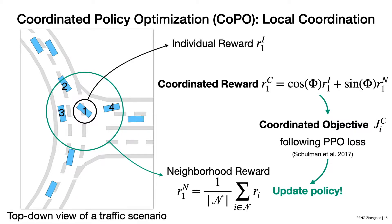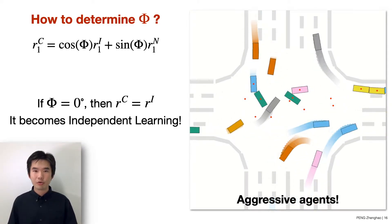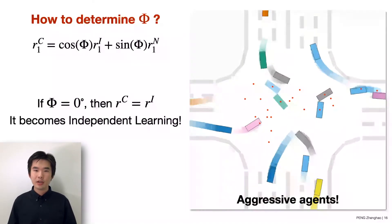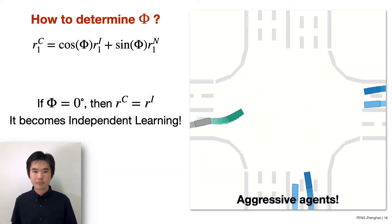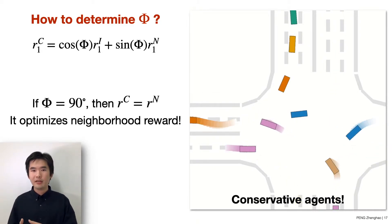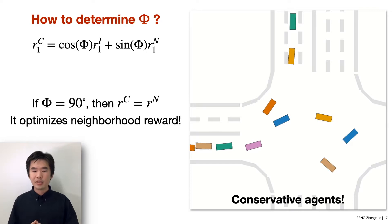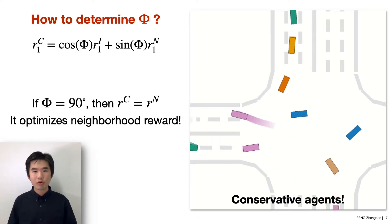Local coordination has a key challenge: how do we determine LCF phi? If we manually assign phi equal to zero degrees, the coordinated reward reduces to the individual reward, and local coordination reduces to independent learning, leading to aggressive agents because agents only maximize their own reward without awareness of others. Conversely, if we assign phi to 90 degrees, the coordinated reward reduces to the neighborhood reward, leading to conservative agents that only learn to yield to others so neighbors can earn rewards.